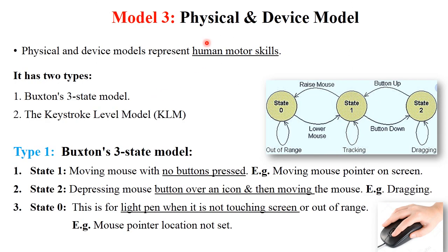The third model is the Physical and Device Model. It represents human motor skills and has two types: Three-State Model and Keystroke Level Model. The first type is the Three-State Model, which is generally used for mouse purposes. The mouse is a hardware device connected to your computer, and its functionality is based on this Three-State Model.